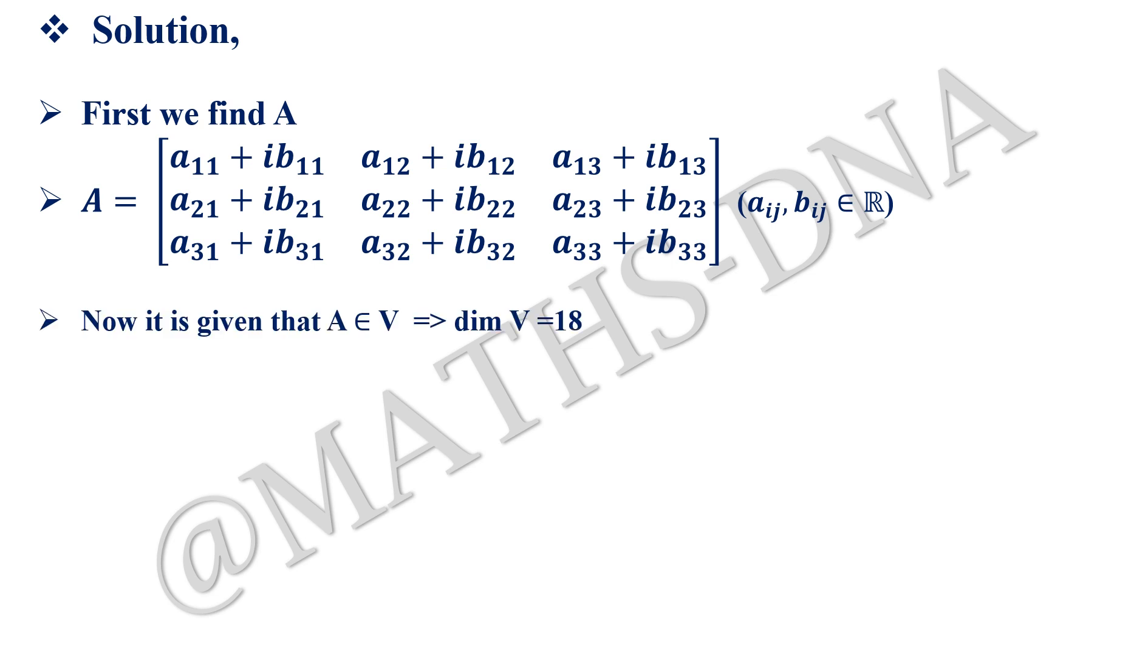So clearly, as A belongs to V, the dimension of V is 18. All the 18 elements are independent over here.